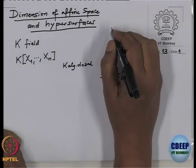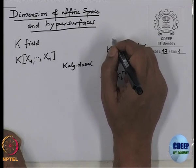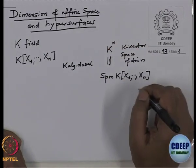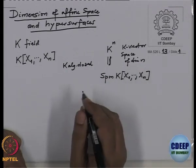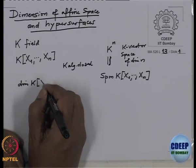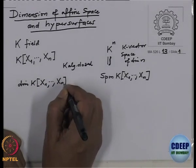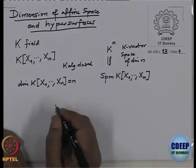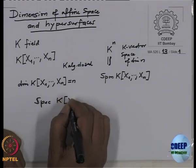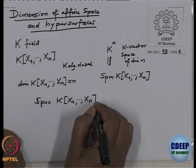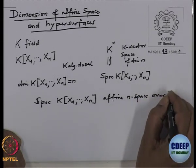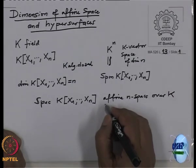Note that when you have a usual field like the real numbers or complex numbers, one takes the usual topology on K^n, but here we have the Zariski topology, which is weaker than the usual topology. This n, in this setup, corresponds to the Krull dimension. This is n. For this reason, Spec of K[X1, ..., Xn] is called affine n-space over K, and it is n-dimensional.